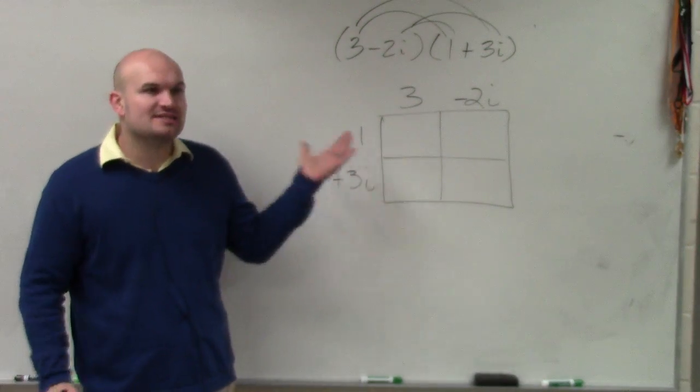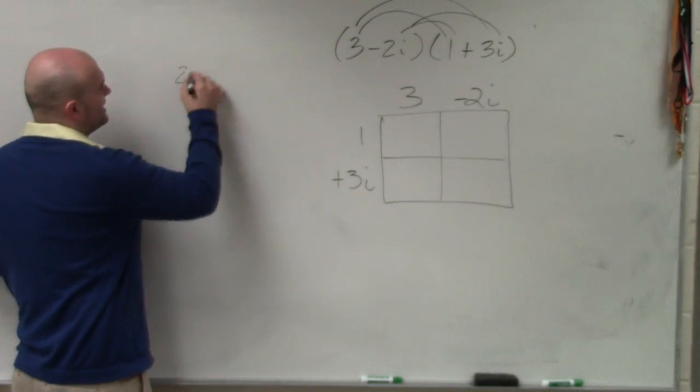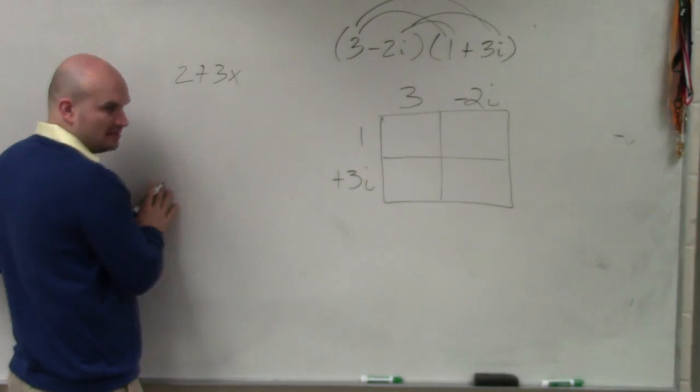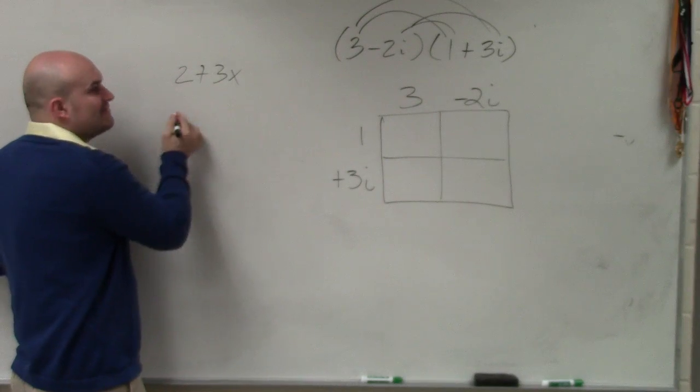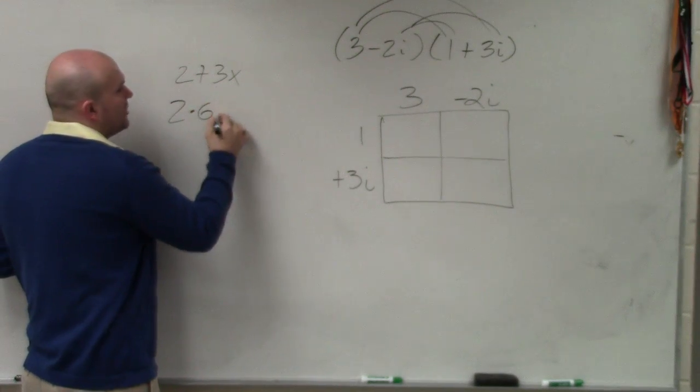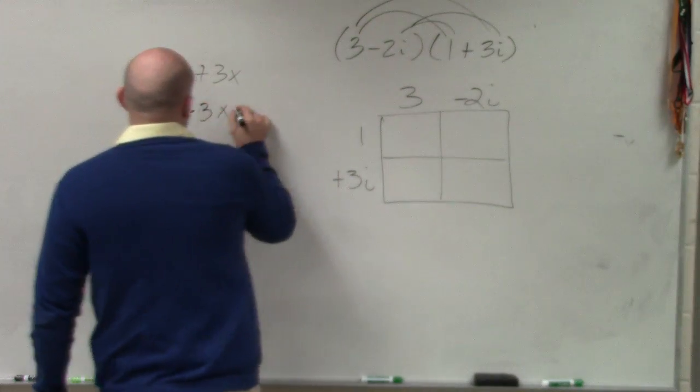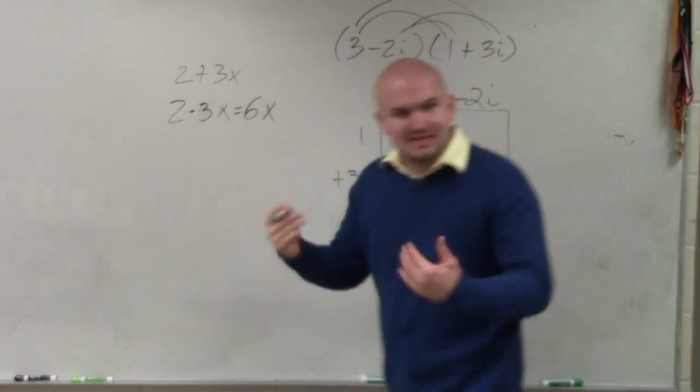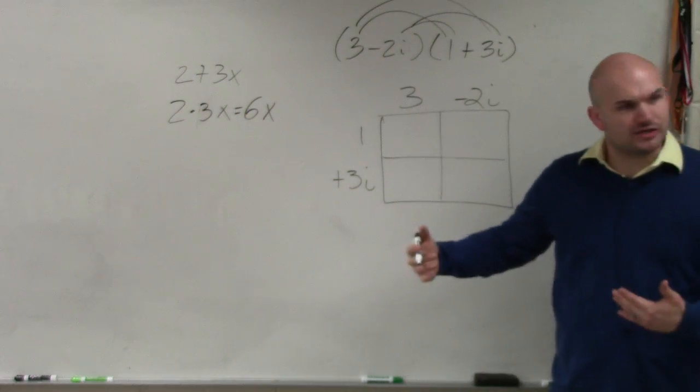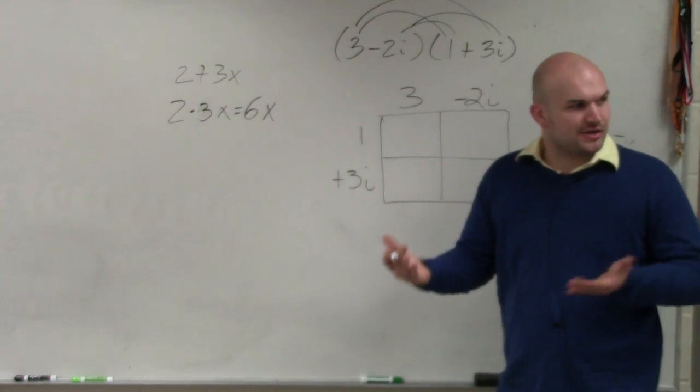But with multiplication, it's kind of like, you know, I can't add 2 plus 3x, right? Those are not like terms. They don't have the same variable factors. But I can multiply 2 times 3x. That gives me 6x. Well, that's kind of the same thing with real and imaginary numbers. Yeah, we can't add real to imaginary,